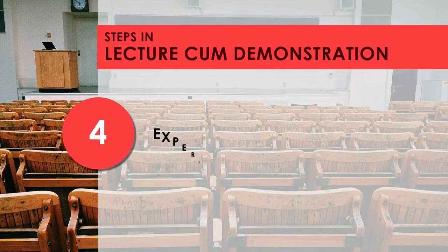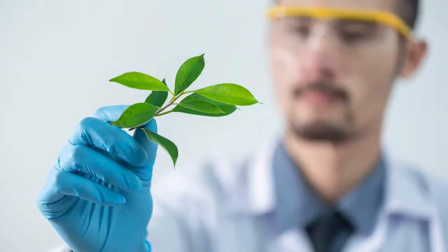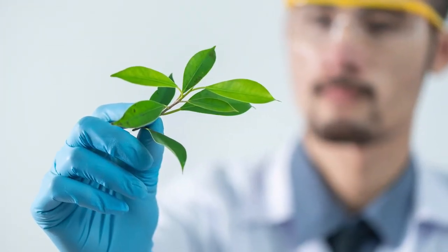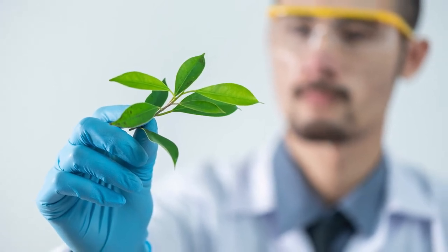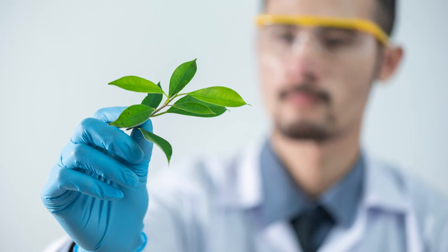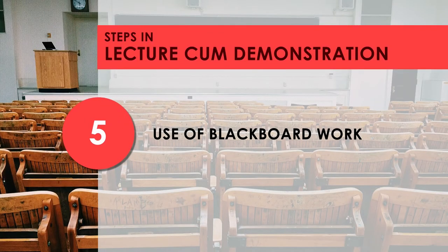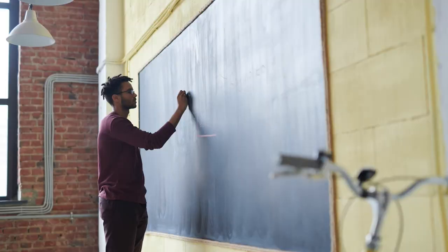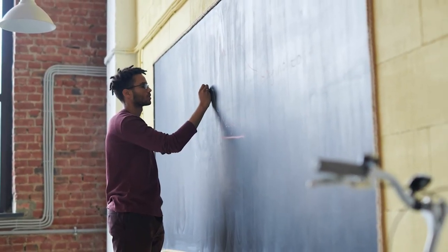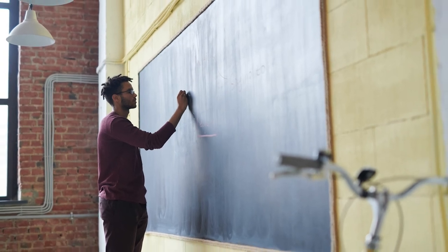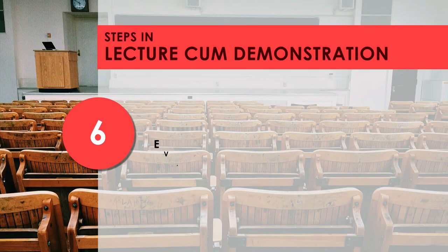The next step is experimentation. The teacher should conduct the demonstration with the help of students, asking questions at each step to ensure students observe essential features carefully. The teacher should also motivate students to think about the how and why of the activity. The teacher should finally guide students to conclude the result and arrive at a generalization. Next is the blackboard summary: essential points of the lesson, including the purpose of the demonstration, the steps, and finally the results, should be listed briefly on the blackboard.